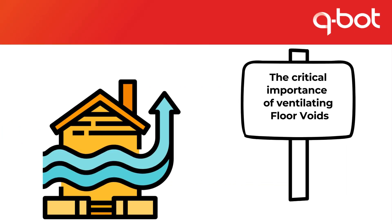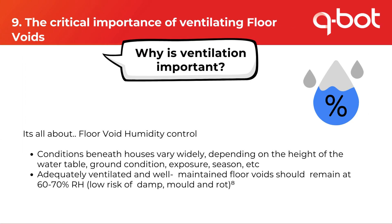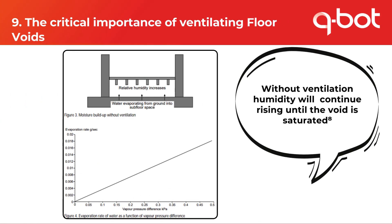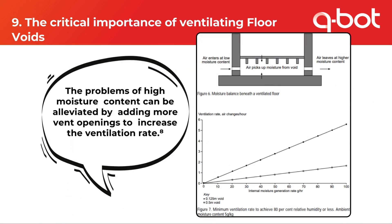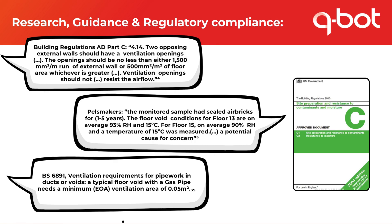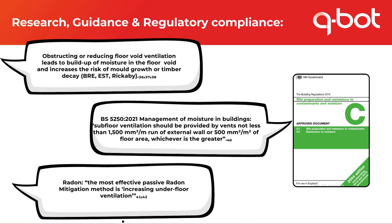The critical importance of ventilating the floor void is all about humidity control. Conditions beneath houses vary wildly depending on the height of the water table, ground condition, exposure and the season. Adequately ventilated and well-maintained floor voids should remain at 60–70% relative humidity. Without ventilation, humidity will continue rising until the void is saturated. Problems of high moisture content can be alleviated by adding more vent openings to increase the ventilation rate.